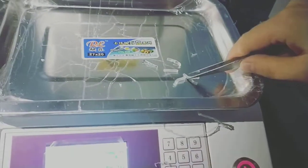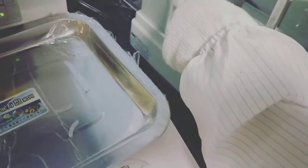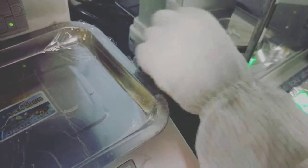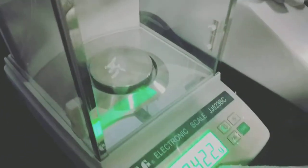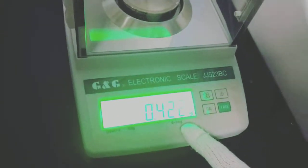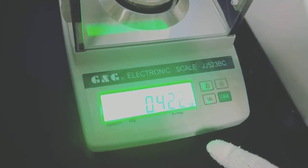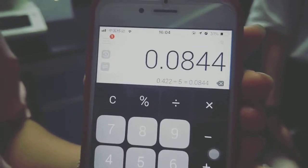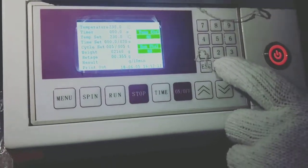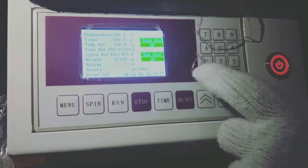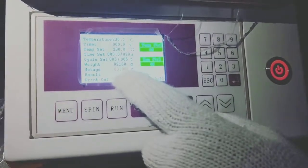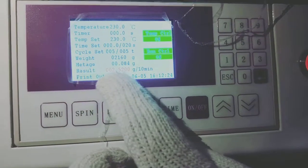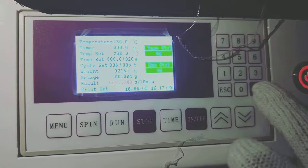Then we measure the five samples weight on the balance. We get those five samples weight is 0.422. So each one is 0.422. Each piece is 0.0844. Then we input the sample weight, 0.044, then enter. Then we will get the result, 2.52 grams per 10 minutes. And print the result.